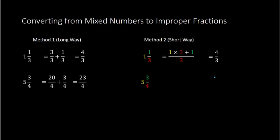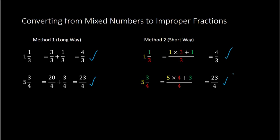Let's try the short method again with 5 and 3 fourths. The denominator stays as 4. For the numerator, we do 5 times 4 plus 3: 5 times 4 is 20, plus 3 is 23. So the answer is 23 over 4. Notice both methods give the same solutions — 4 thirds and 4 thirds, 23 fourths and 23 fourths — so the shortcut method is the preferred approach.